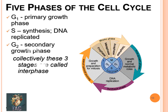There are five phases of the cell division cycle. First is the growth or primary phase (G1). Second is the synthesis phase in which DNA is replicated. Third is the growth phase G2. Collectively these three stages are called interphase. Last is the mitosis phase, after which cytokinesis occurs.